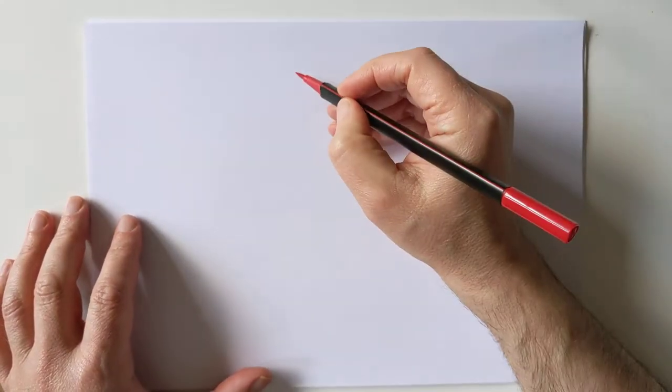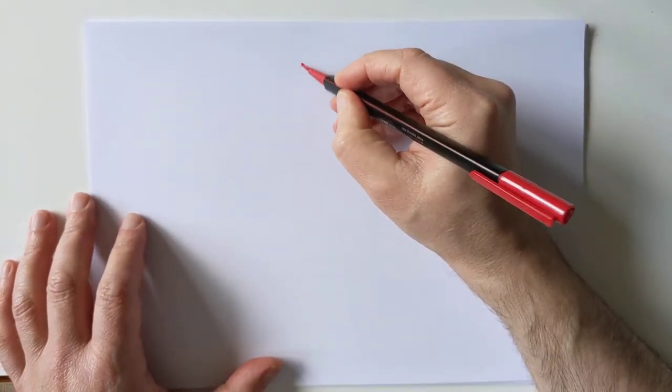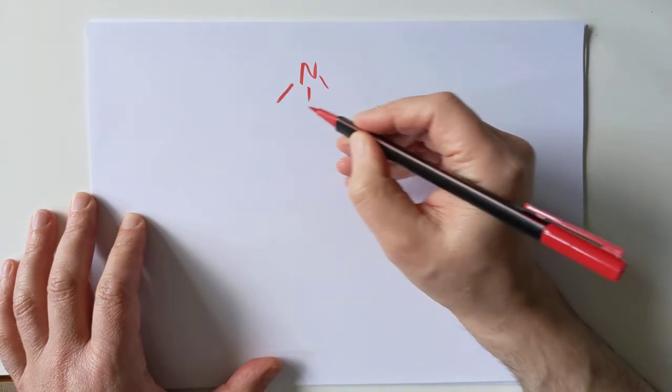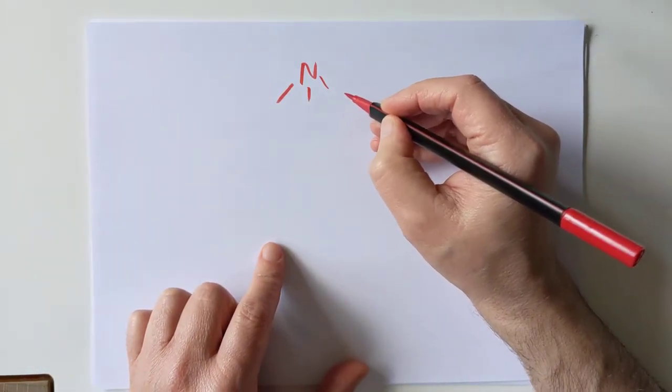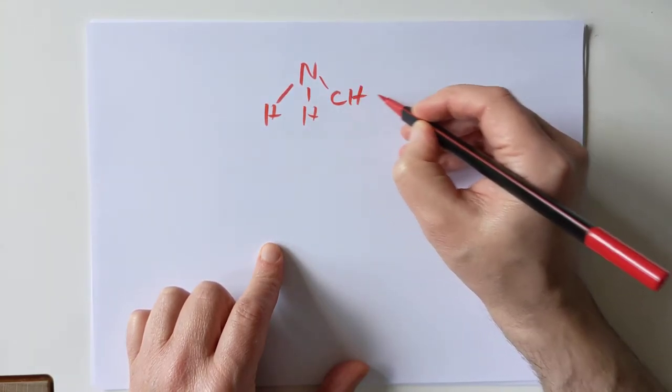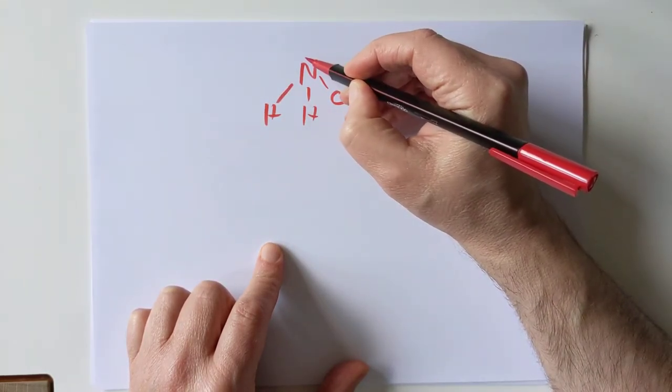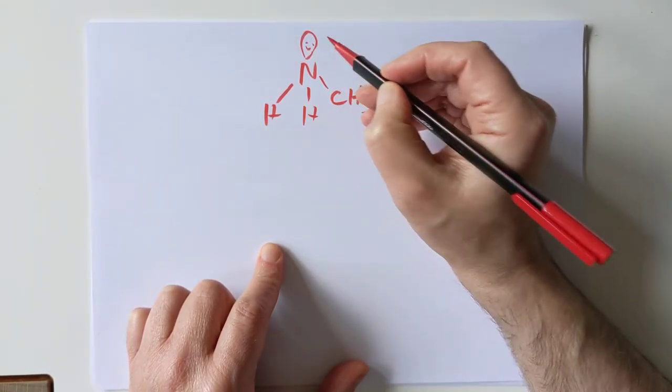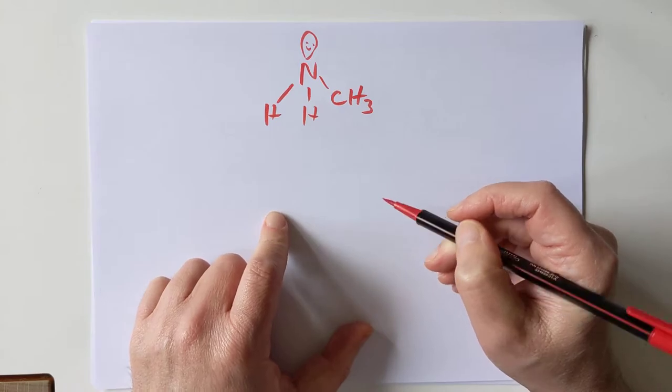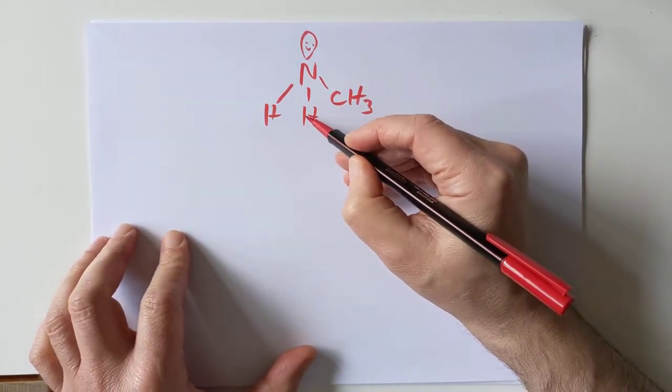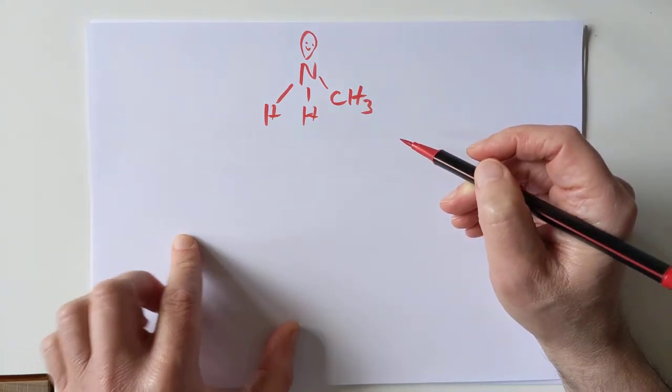An amine is basically like ammonia where you have replaced one or more of the hydrogens with an alkyl chain. Alkyl, fancy words, just means carbon chain. So let's stick with the simplest amine, which would be this. We have a non-bonded pair of electrons, of course, which enables amines to do their basic thing in the same way as ammonia can do. It's a happy non-bonded pair. In the same way as ammonia can accept incoming hydrogen ions and so on.